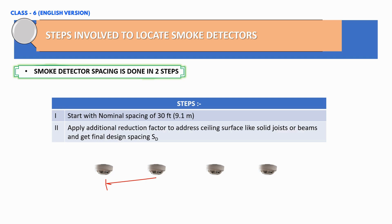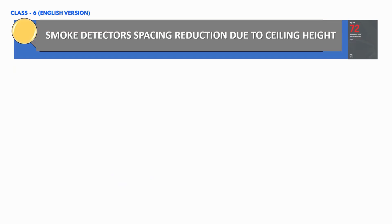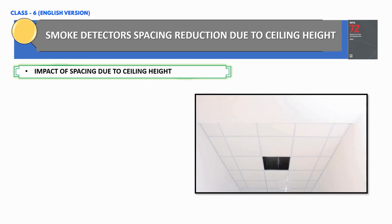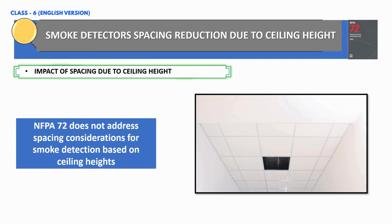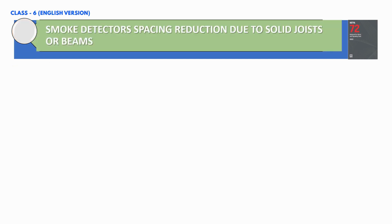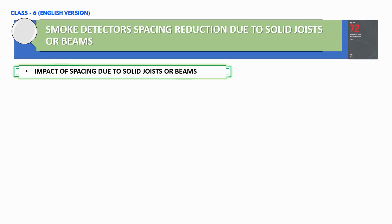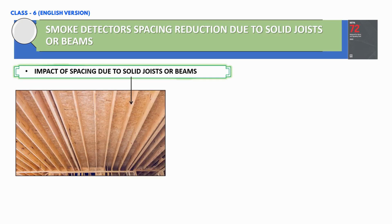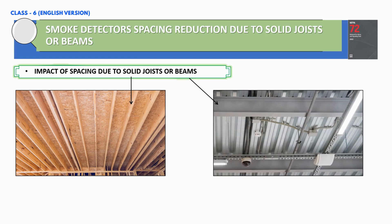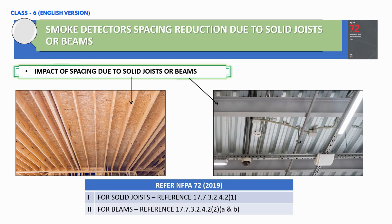The final design spacing will be SD, and we need to take care of all these points before we finalize the design. NFPA 72 does not address spacing considerations for smoke detection based on ceiling heights. There is an impact on spacing between detectors due to solid joists and/or beams, and manufacturer recommendations along with NFPA guidelines must be followed before placing smoke detectors in joists or beams.